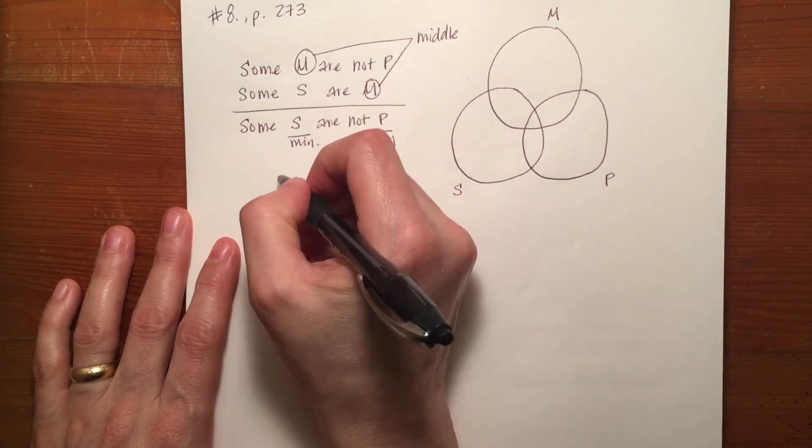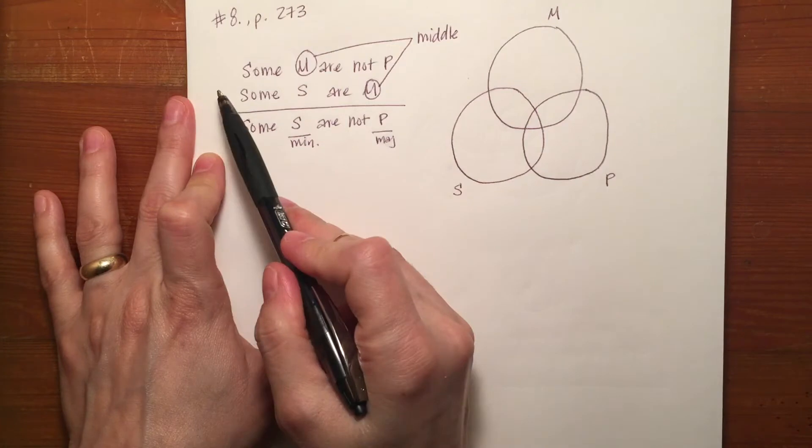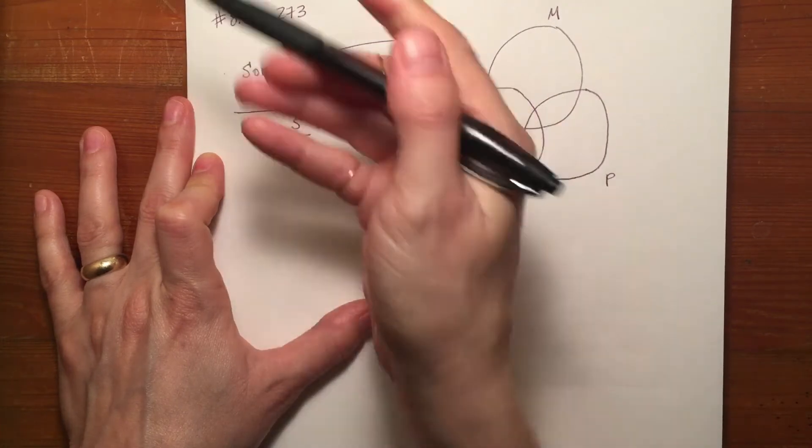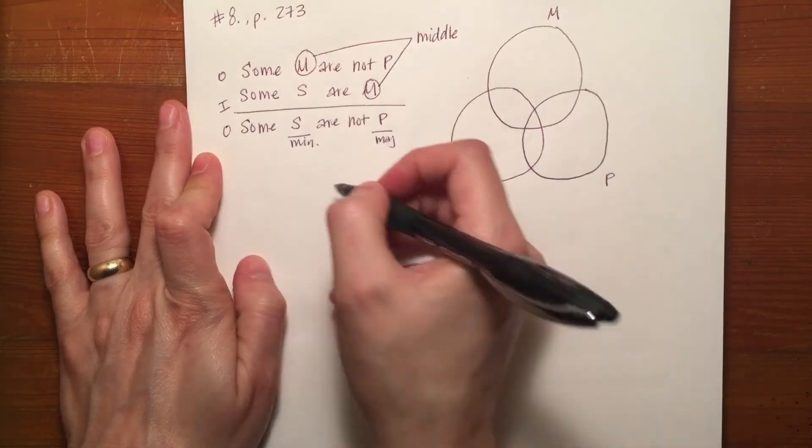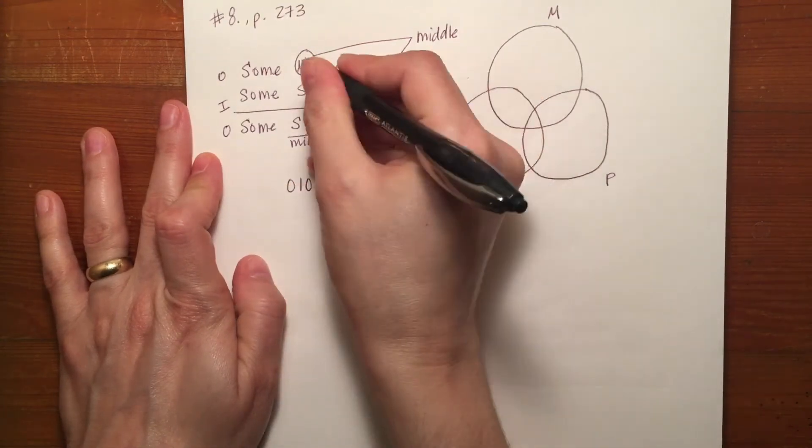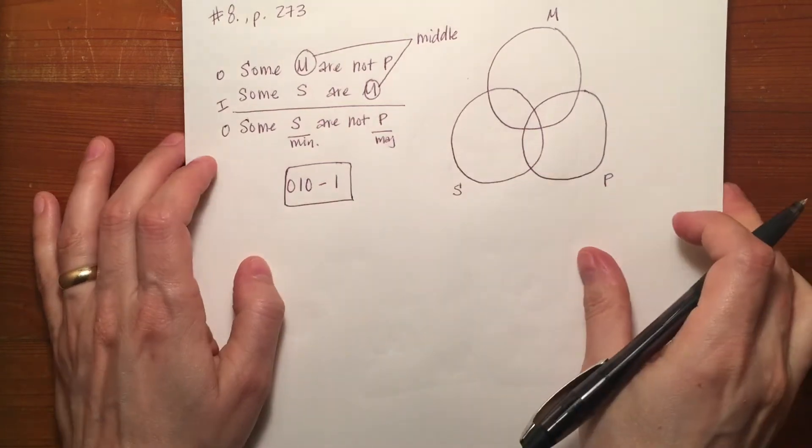If we look at the mood from top to bottom we've made sure that it's in the correct standard form, so it would be an O statement, an I statement, and then an O statement. So it's OIO, and the figure is one. We can use that again to check our answers.